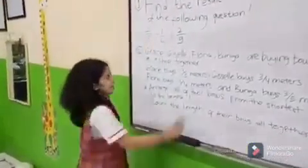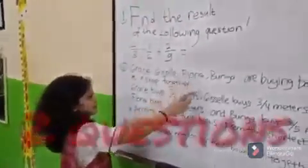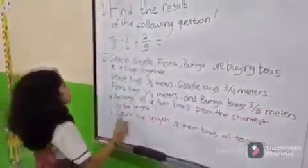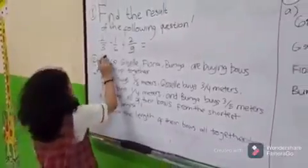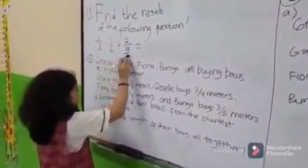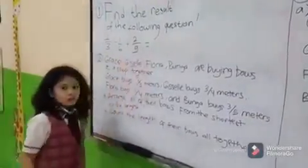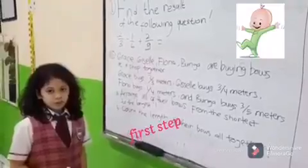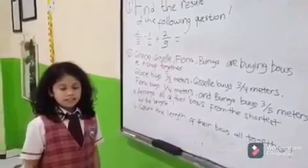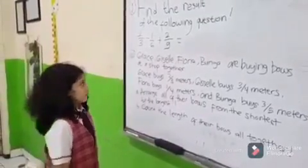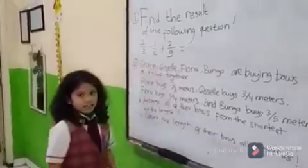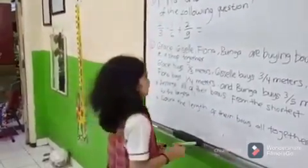Here I have two questions. Let's solve the first one: two-thirds minus one-sixth plus two-ninths. The first step to solve this problem is by making the denominators the same — a number that can divide three, six, and nine. And the number is eighteen.